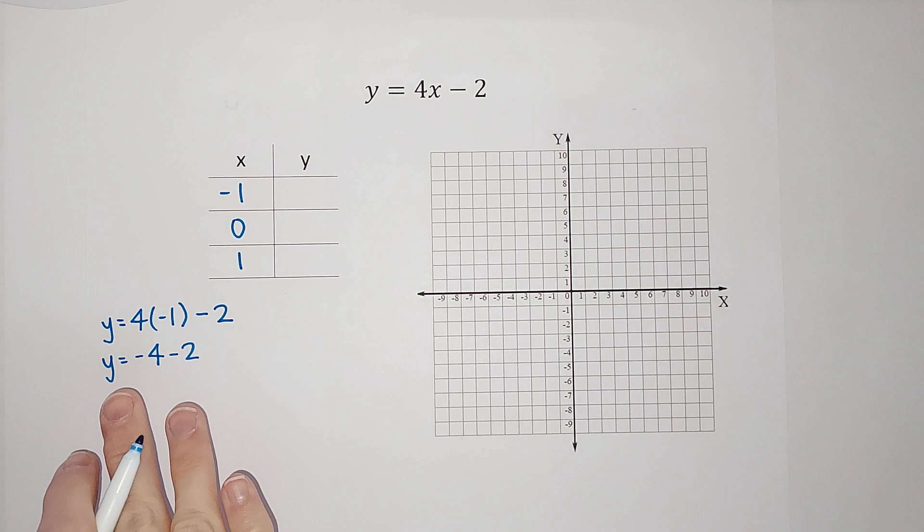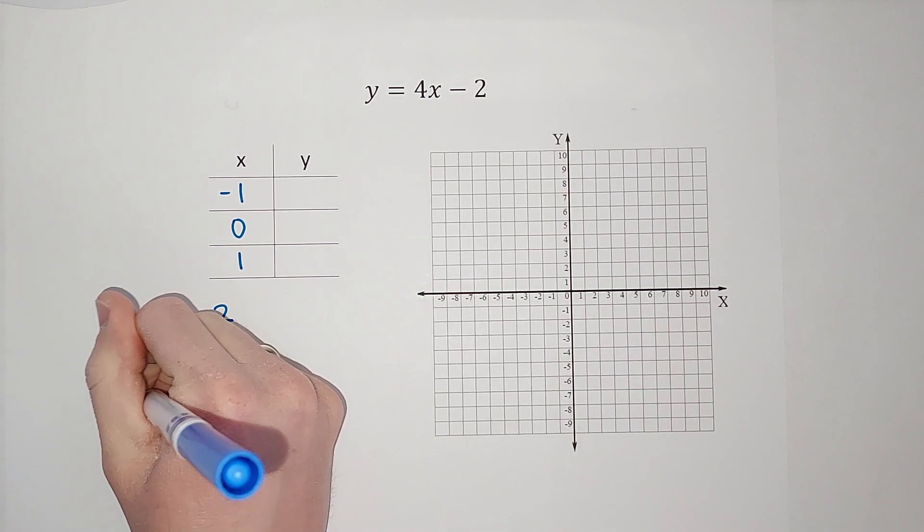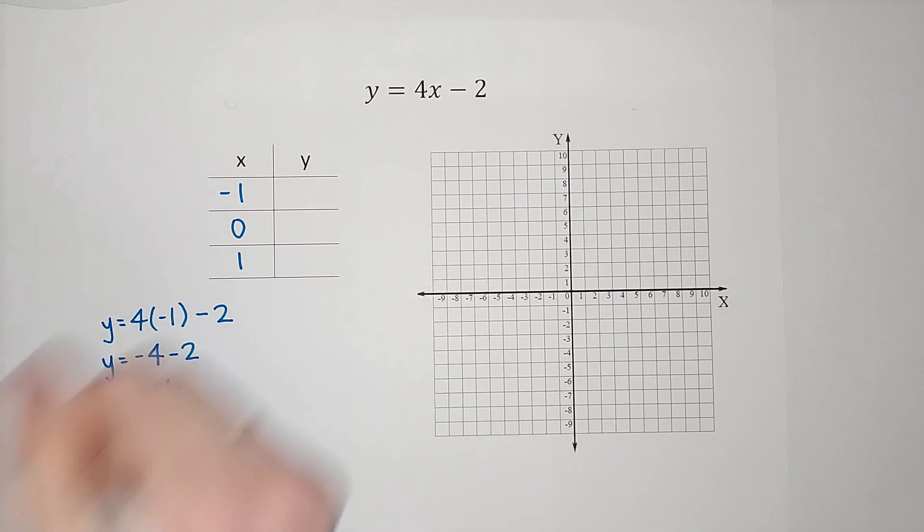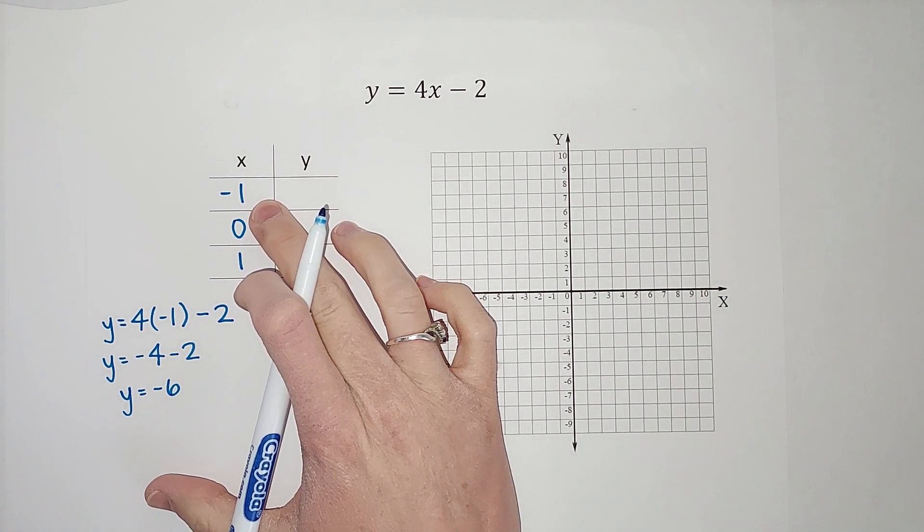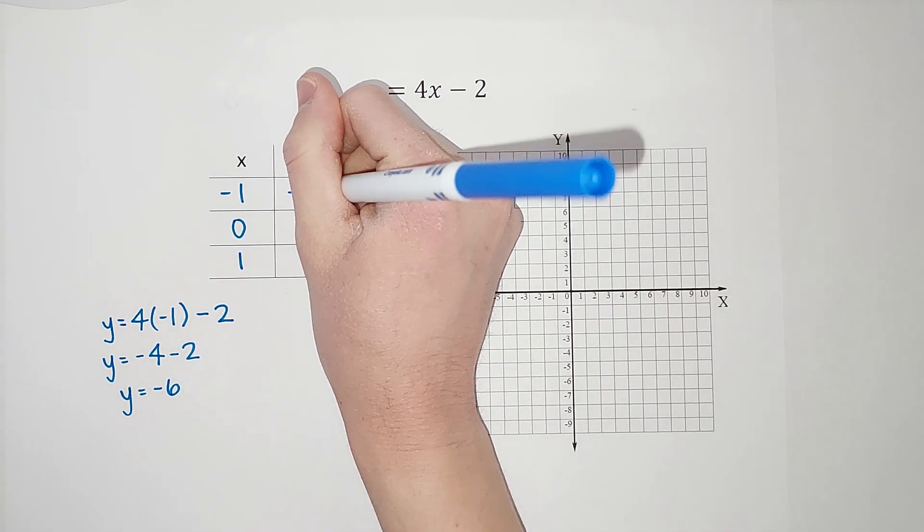This is like, I owe you $4 and I'm like, I got to borrow two more dollars. I'm sorry. So now I owe you $6, right? So when x is negative 1, y is negative 6.